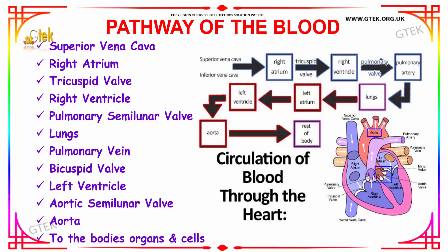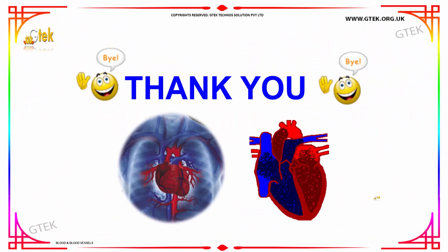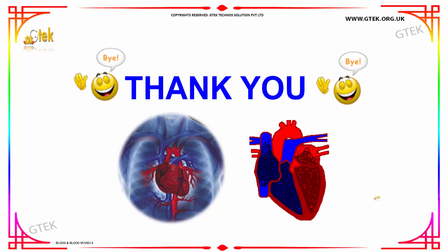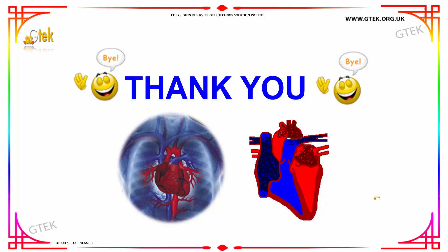From the aorta, the pure blood is transported to the body's organs and cells. This is how blood enters and travels through the heart and lungs in a circulatory system. Thank you for joining Gtech — we hope you found this tutorial useful.